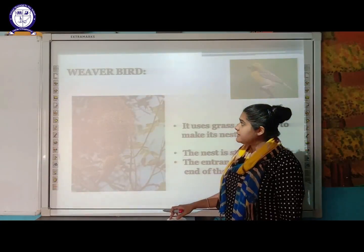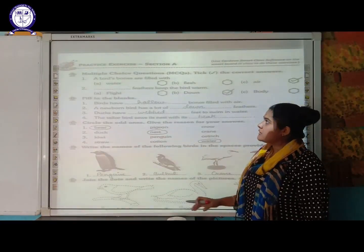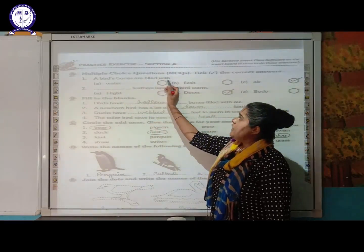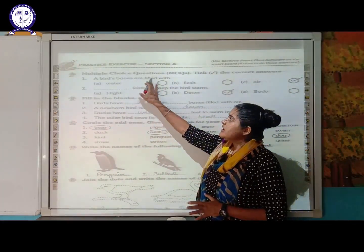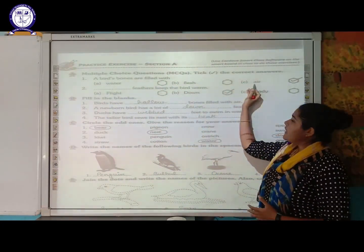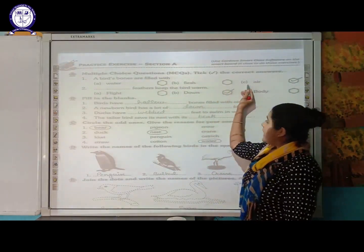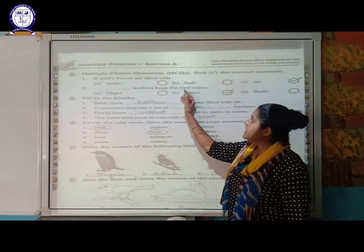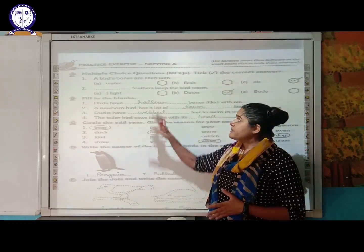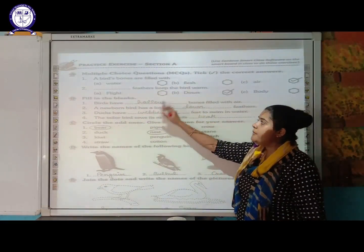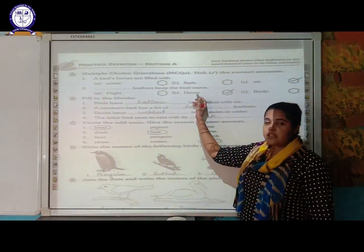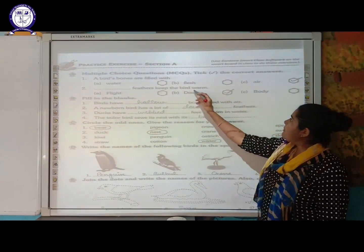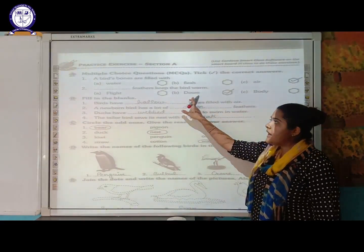Now for the exercise, section one: multiple choice questions. First — a bird's bones are filled with water, flesh, or air? The answer is air, which makes their bones light and helps them fly. Second — which feathers keep the body warm? Down feathers keep the bird's body warm, while body feathers give the bird its shape.